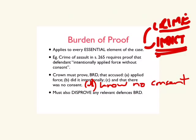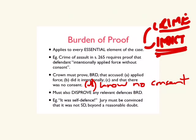It's also up to the prosecution to disprove any relevant defenses. The criminal law does not treat defenses differently than elements of the offense — the burden of proof still rests with the Crown. So to take an example: if the accused says it was self-defense, the jury must be convinced at the end of the day that it was not self-defense beyond a reasonable doubt.